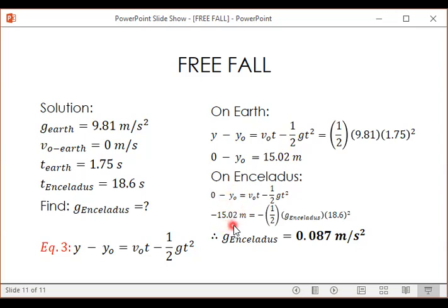So we have, let's substitute. We have initial height of 15.02 meters, and then this is still zero since our initial velocity is zero. And then substitute our given: negative one half, the g we're looking for, and then the time on Enceladus is 18.6, so 18.6 squared.